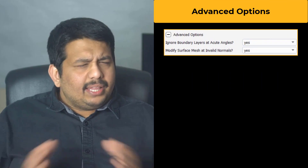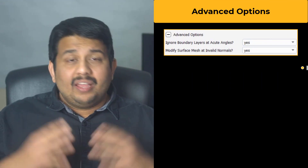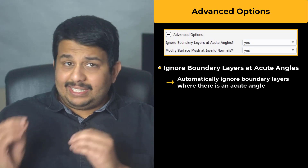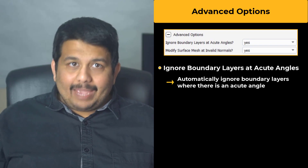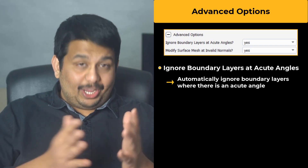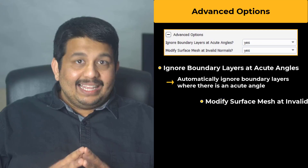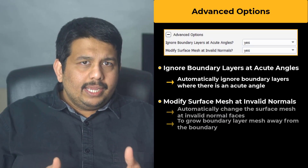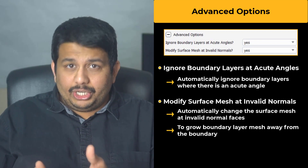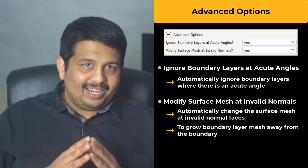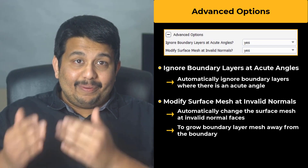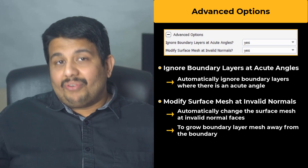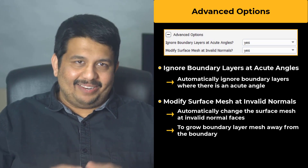Additionally, there are two advanced options. The first is Ignore Boundary Layers at Acute Angles, which when set to Yes will automatically skip boundary layer generation where there are acute angles. The second is Modify Surface Mesh at Invalid Normals, which will automatically change the surface mesh where invalid normal faces are detected so that the boundary layer mesh grows in the proper direction, that is, away from the boundary. For further details, please refer to the User Guide.